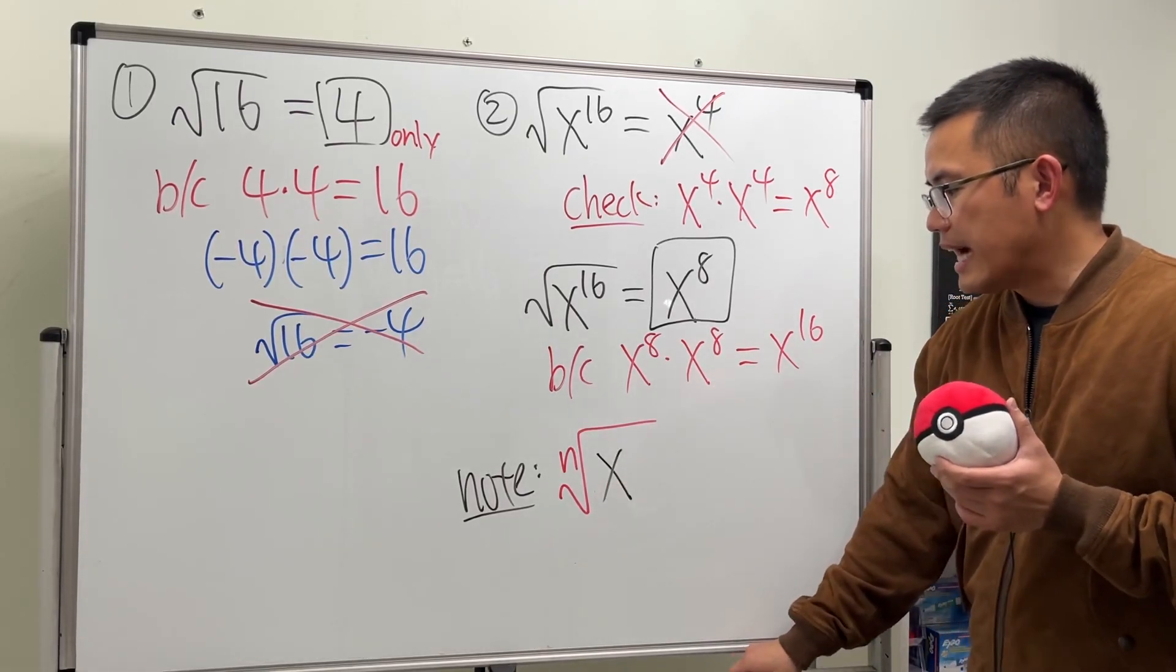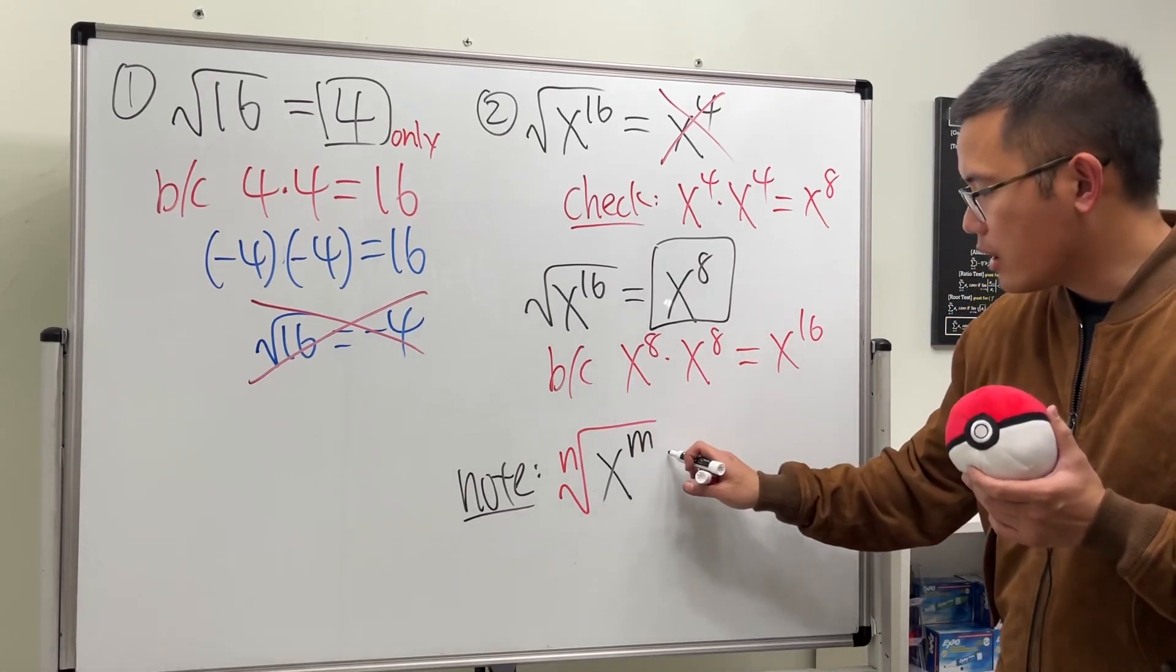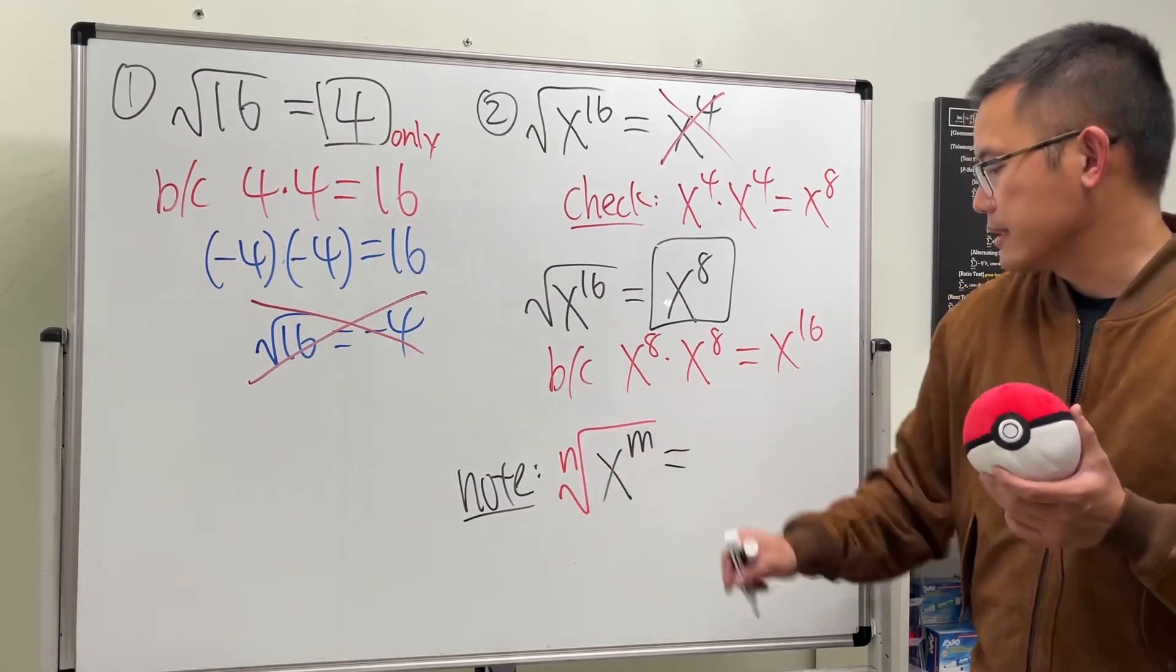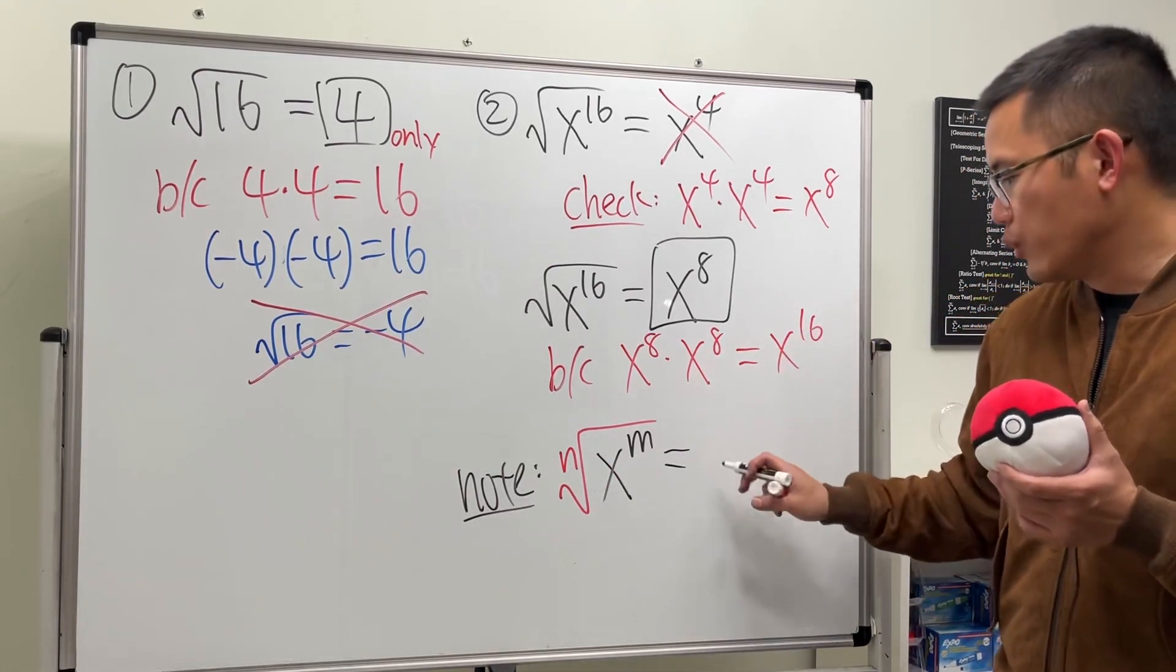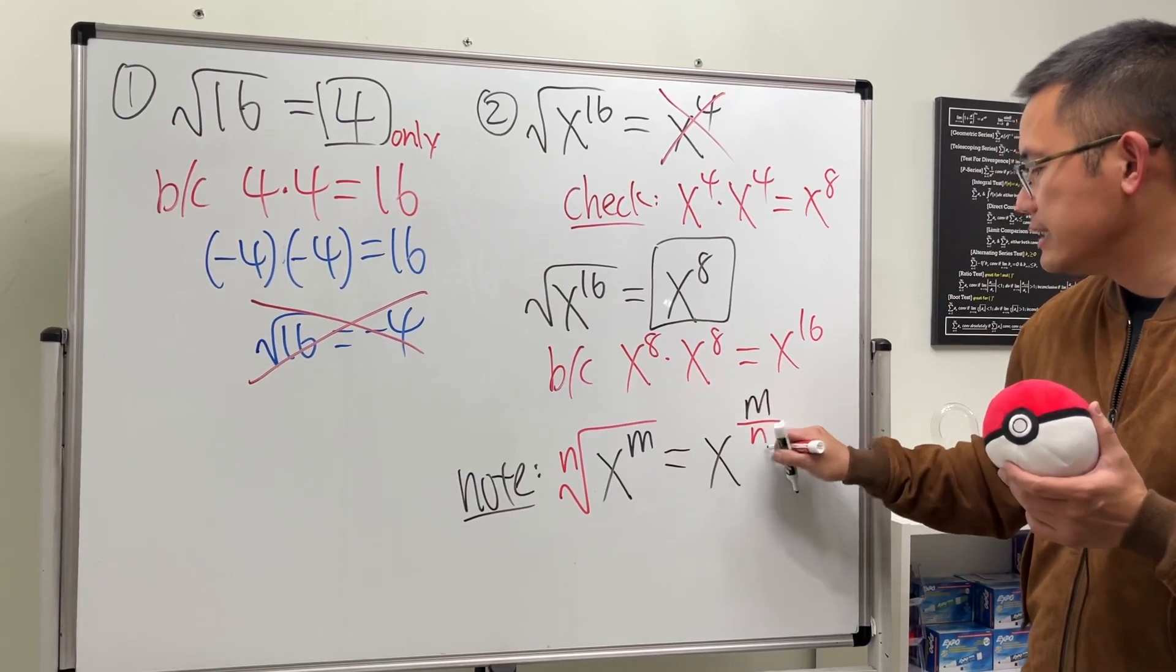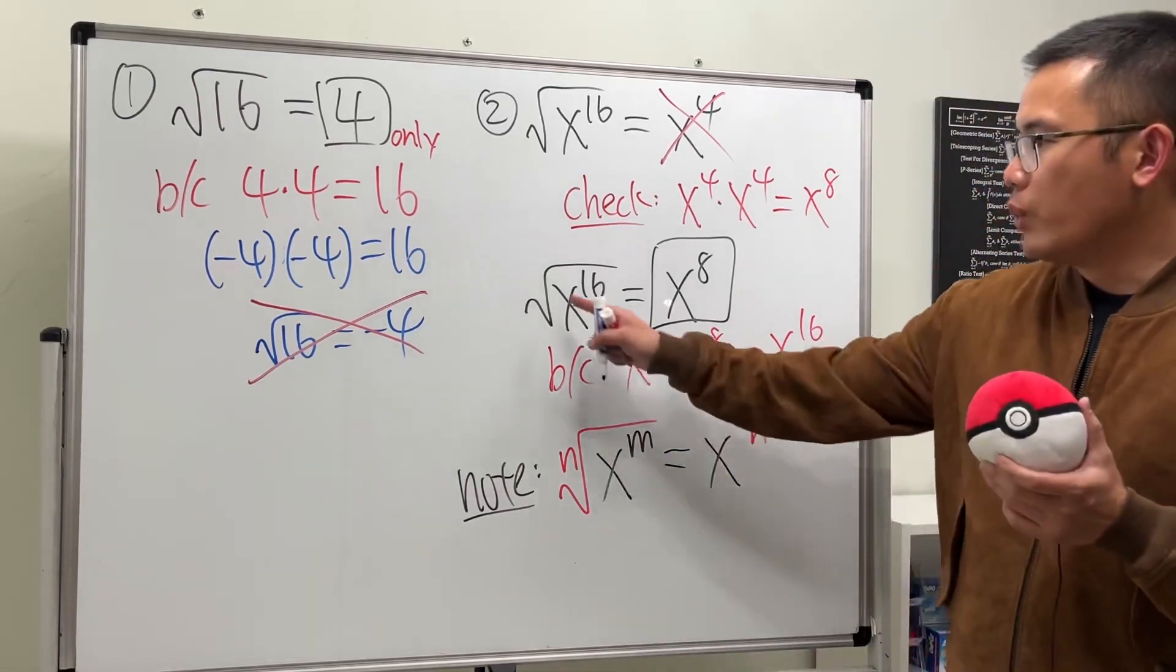This right here, the way to simplify is you take this and you divide it by that in the exponents. So we get x to the m over n's power like so. And another note I want to tell you is that when we have the square root, this means the radical has the n value that's called index 2.